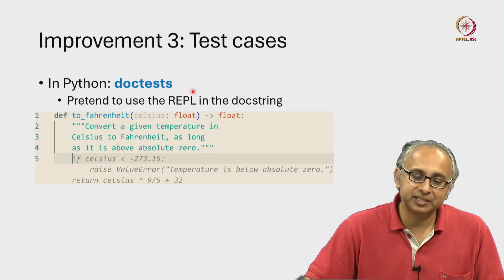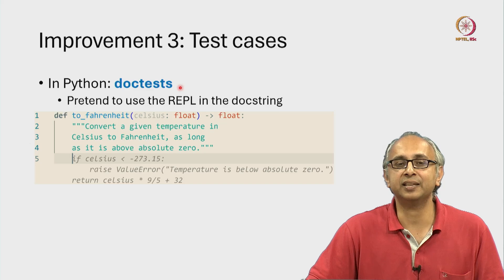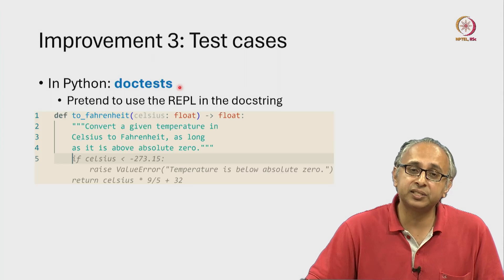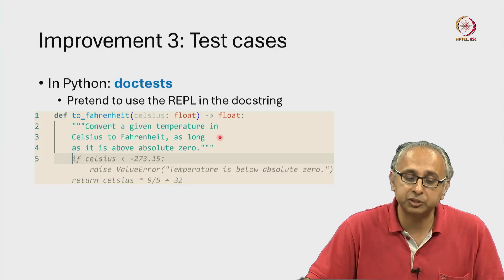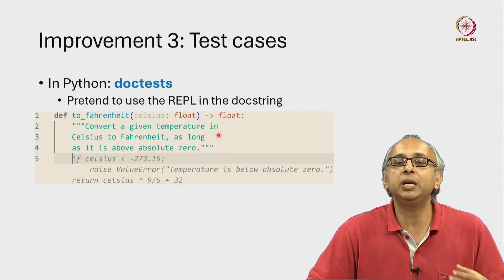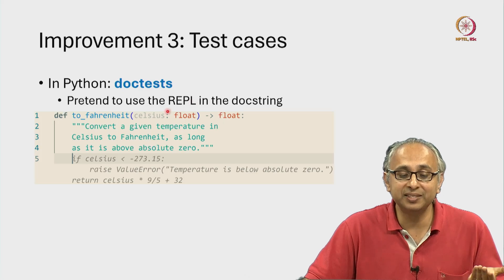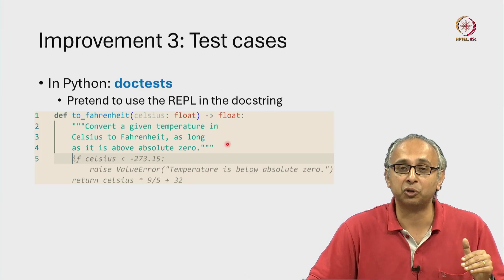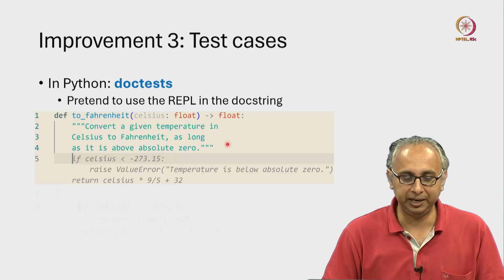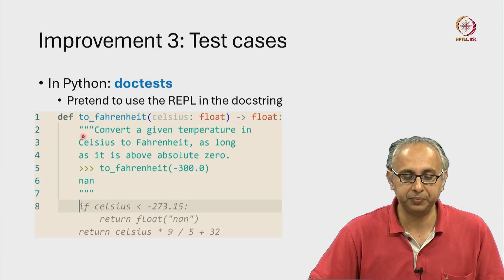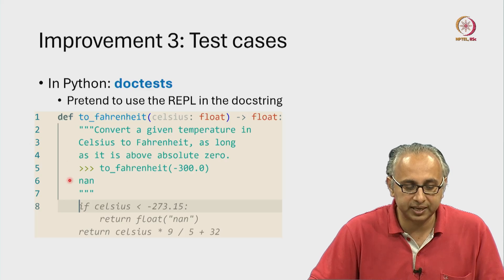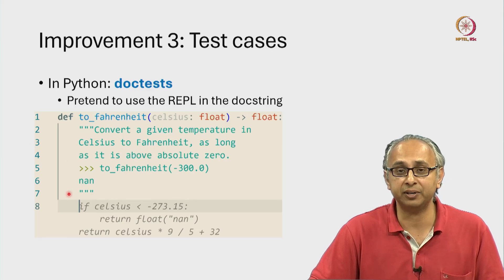In Python, a simple way of writing test cases is using what we call doctests. Doctests are written as part of the docstring. Here's an example — our docstring starts on line two and in this case it ends on line seven.